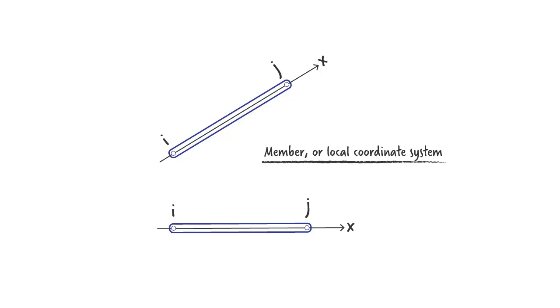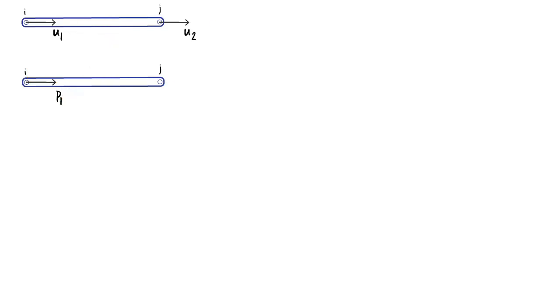In the local coordinate system, our truss member has only two degrees of freedom, the axial displacement at ends I and J. Let's label them U1 and U2. We can then define a force at each end of the member. Let's label them P1 and P2.